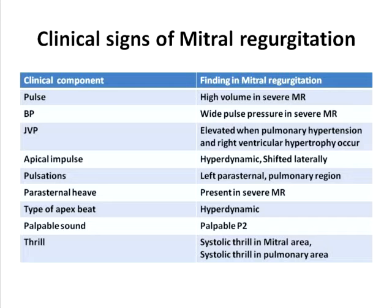For the same reason, blood pressure will show a wide pulse pressure, which is the difference between the systolic pressure and the diastolic pressure, in patients with severe mitral regurgitation. And when mitral regurgitation leads on to the development of pulmonary hypertension and right ventricular hypertrophy, the JVP becomes elevated.